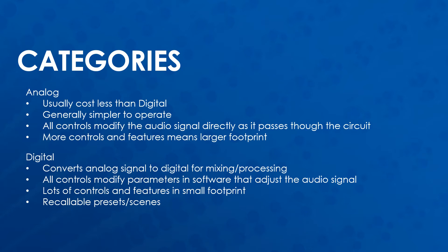Digital mixers have the capability to store and recall presets or scenes. This allows a user to save a particular mixer state and recall it at a future date. For example, after a football game, everything has been tweaked and adjusted to how the operator likes it, but there is a track event coming up that requires different audio sources and levels. The football preset can be saved, the mixer can be set up for the track event and saved in another preset, and now switching between sports is as easy as recalling the correct preset.